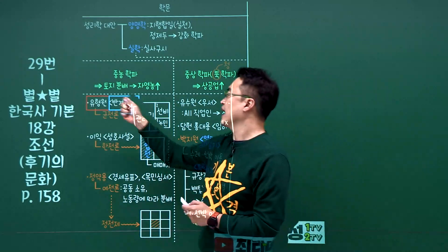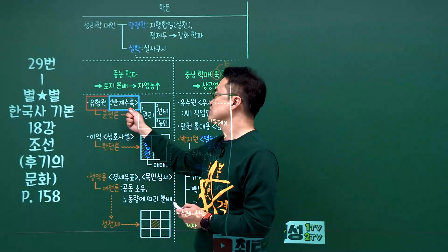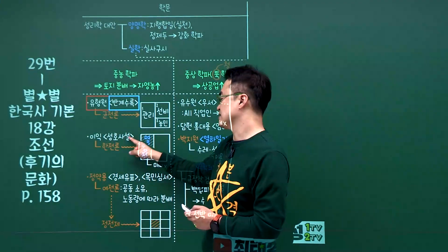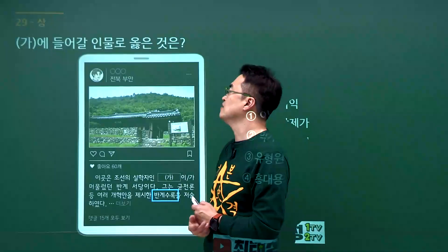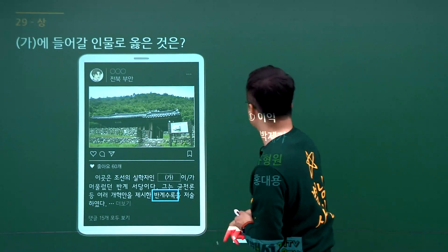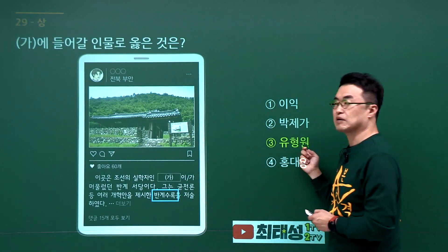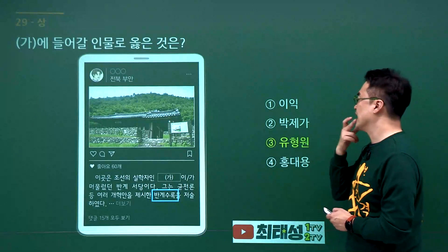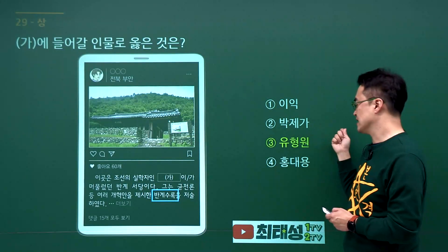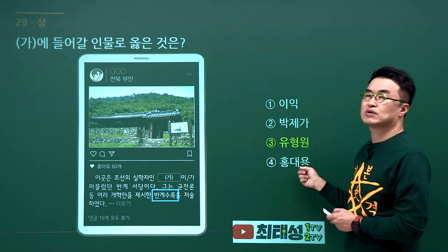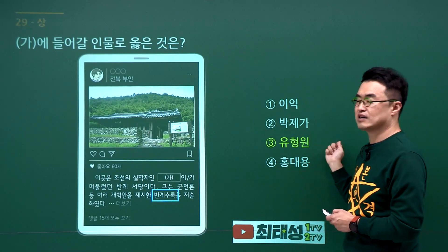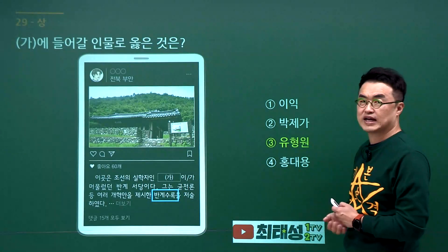조선 후기 실학자 문제입니다. 유형원의 반계수록, 이익의 성호사설이 딱 붙어야 합니다. 문제에서 반계수록이 나왔으니 이 인물은 유형원입니다. 이익의 성호사설, 박제가의 북학의, 홍대용의 의산문답도 있습니다. 유형원의 반계수록이 정답으로 3번입니다.